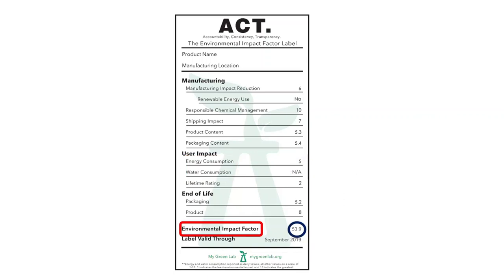We can add all of these numbers up to receive a total environmental impact factor score, shown here. This means you can compare products on the basis of any one of these categories, or you can compare them on the basis of the total environmental impact factor score — again, remembering the lower the number, the lower the environmental impact; the higher the number, the higher the environmental impact.